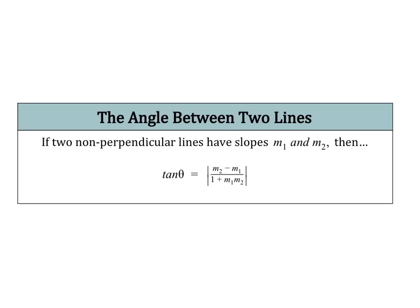The next thing we're going to talk about is how to find the angle between two lines. If two non-perpendicular lines have slopes m1 and m2, then the tangent of the angle between the two lines equals the absolute value of m2 minus m1, all over 1 plus m1 times m2. We'll be using arc tangent again to find this value — it's really just finding the two slopes and plugging into the formula. I also recommend doing a rough sketch of your two lines to see if the angle you get makes sense.